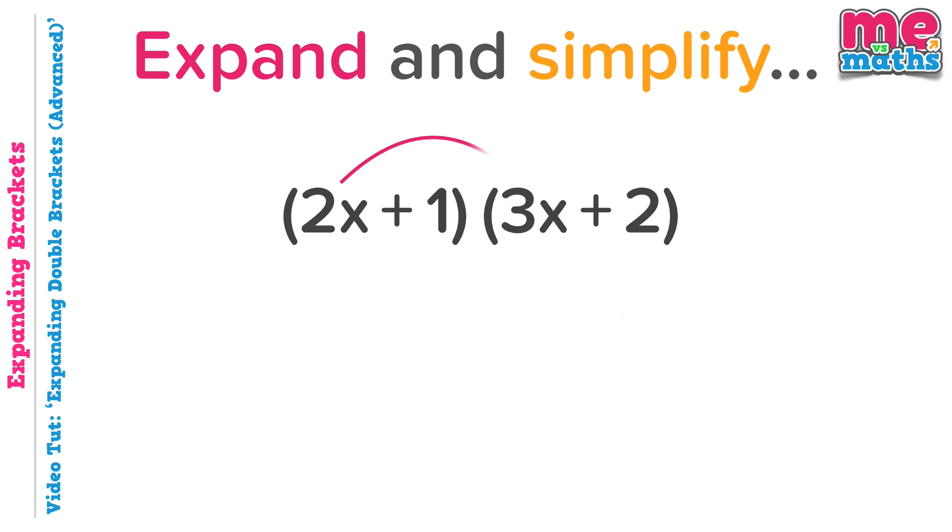Beginning then with 2x times 3x. 2 times 3 is 6, and x times x is x squared, so 6x squared. Then 2x times 2 will give 4x. 1 times 3x is just 3x. And finally 1 times 2 is of course 2.